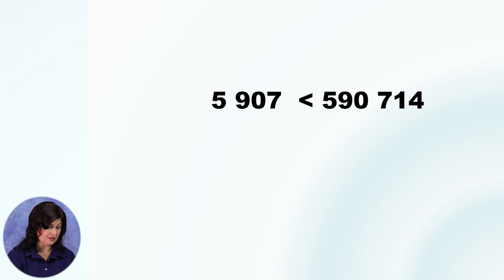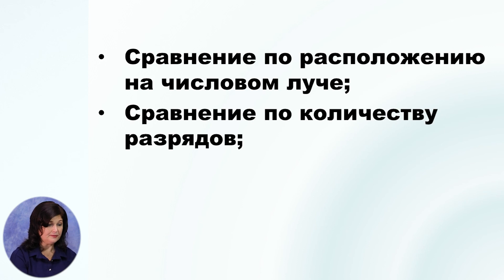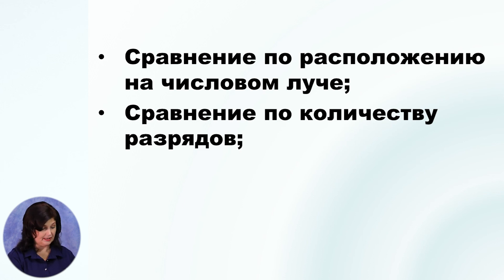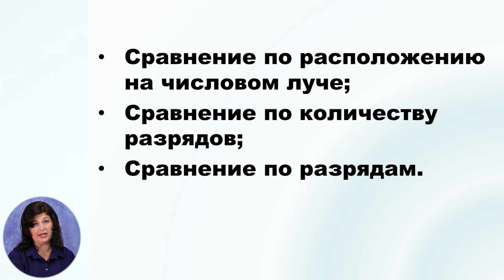Итак, числа можно сравнивать разными способами. Способ первый — сравнение по расположению на числовом луче: из двух чисел больше то, которое расположено правее, и меньше то, что стоит левее. Способ второй — сравнение по количеству разрядов: больше то число, в котором больше разрядов; проверять количество единиц в каждом разряде не надо. Способ третий — сравнение по разрядам: если разрядов в числах одинаковое количество, сравниваем количество единиц в каждом разряде, начиная с высшего.